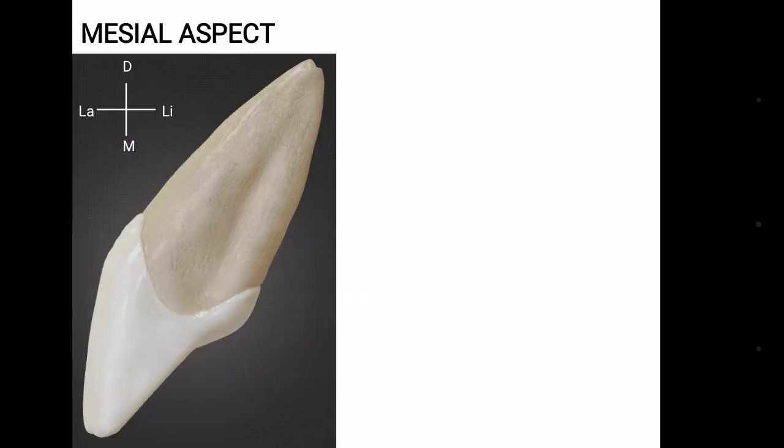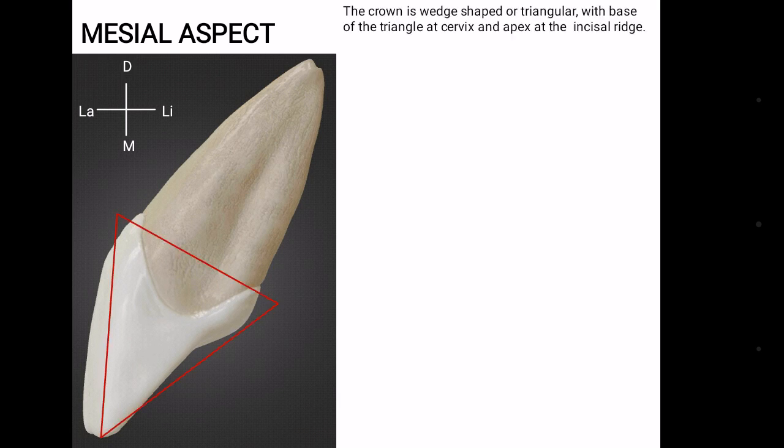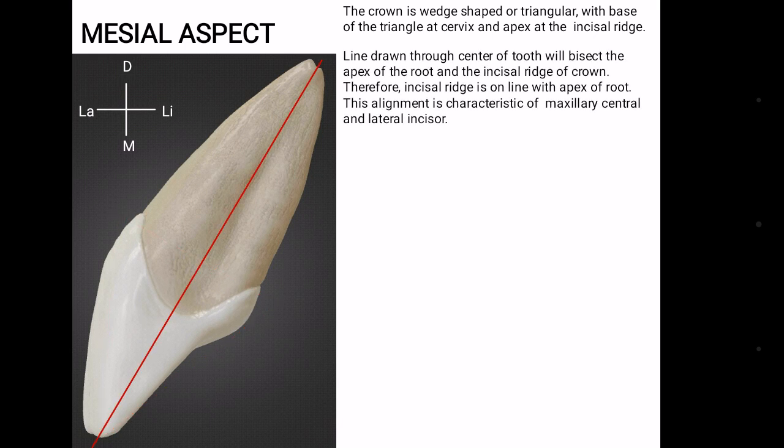Mesial aspect is the surface which is towards the midline. The crown is wedge shaped or triangular with base of the triangle at cervix and apex at the incisal ridge. If we draw a straight line from the center of the tooth, the root apex and incisal edge are bisected. This means the incisal edge and root apex are in the same plane and this alignment is a characteristic feature of maxillary central and lateral incisors.